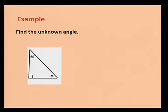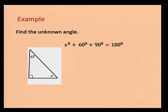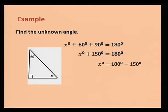Have a look at the second example. In this example also, there is one unknown angle to be calculated. We have angles of 60°, 90°, and x°. Adding the three angles gives 180°. Adding 60° and 90° gives 150°. So, to obtain x°, we subtract 150° from 180°, giving an answer of x° = 30°.